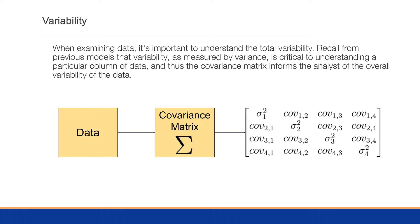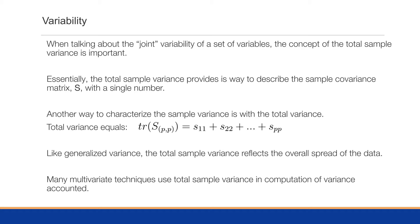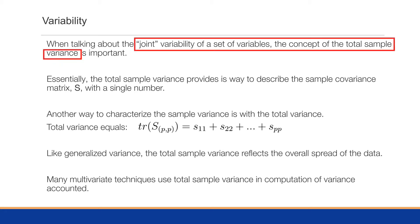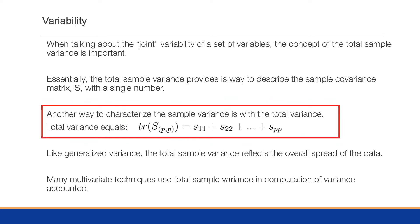Recall that variability as measured by variance is a critical understanding for a particular column of data. The covariance matrix informs the analyst of the overall variability of data, and the diagonal of the covariance matrix holds the individual variances. Taking our example of 40 variables, each will have a certain amount of variance, and putting them together gives us the total variability of the sample data set.